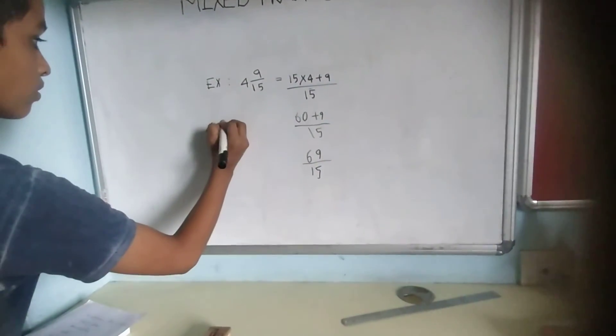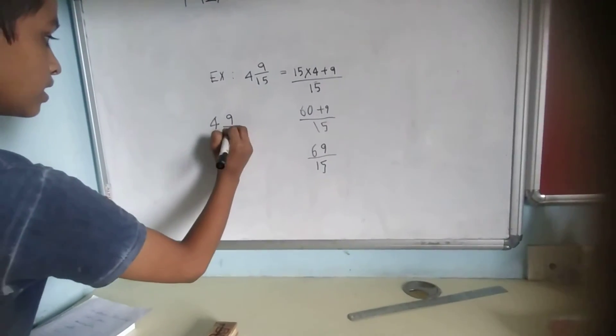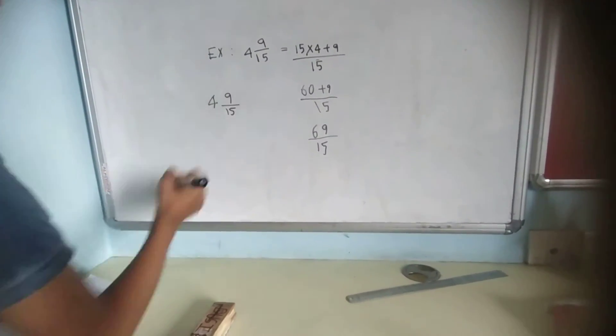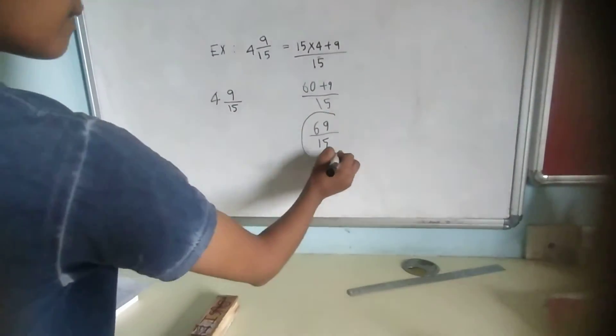4 and 9 by 15 can be written as 69 by 15.